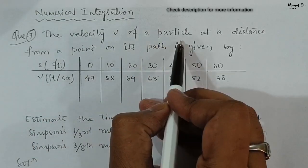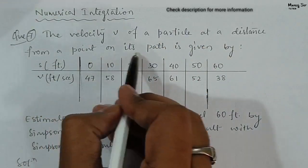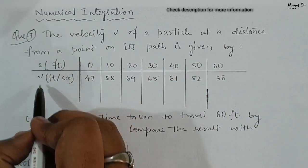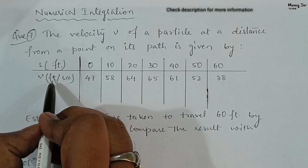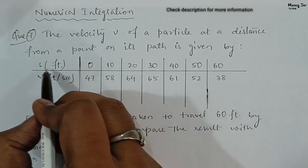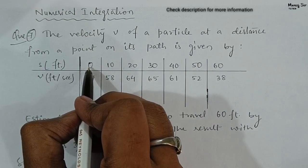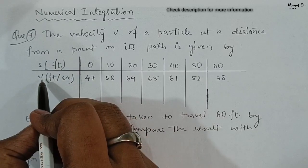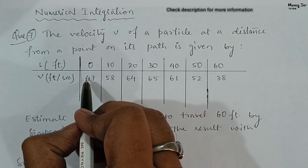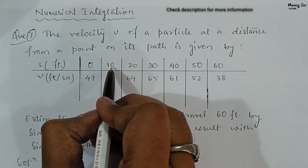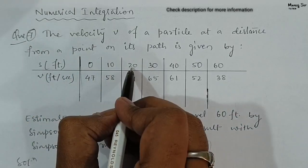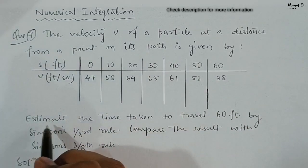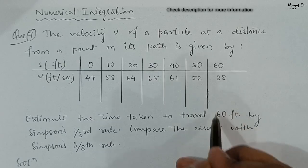The question says: the velocity v of a particle at a distance from a point on its path is given. Distance is given in feet and velocity is given in feet per second. Distance values are 0, 10, 20, 30, 40, 50, and 60 feet. Corresponding values of velocity are 47, 58, 64, 65, 61, 52, and 38. What we need to find is: estimate the time taken to travel 60 feet.